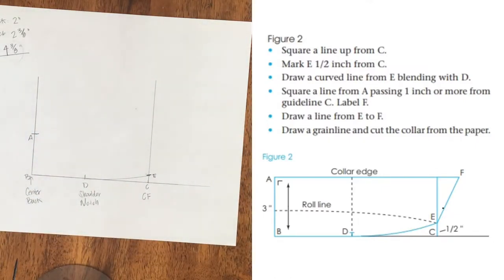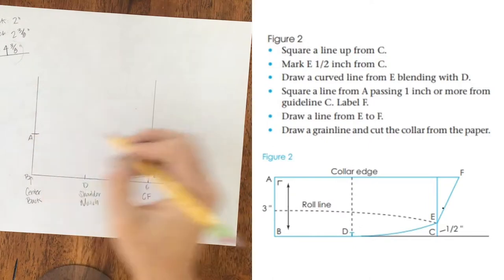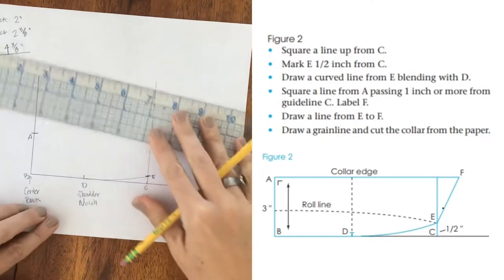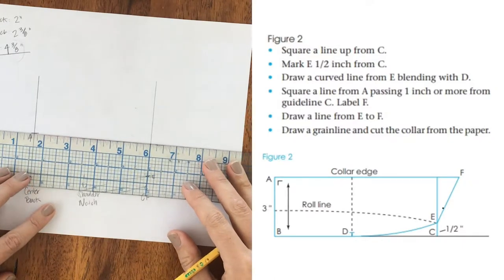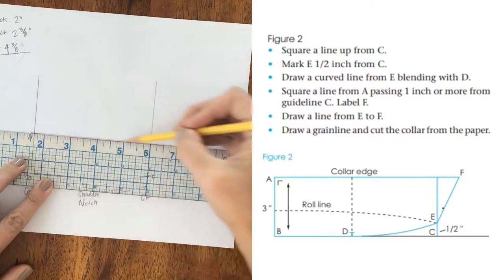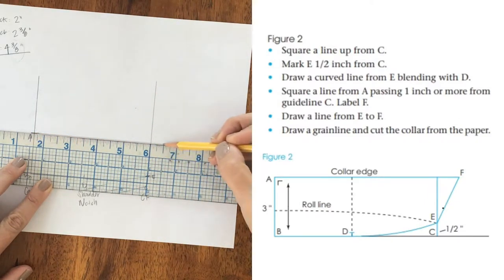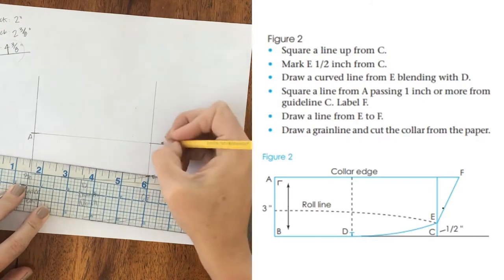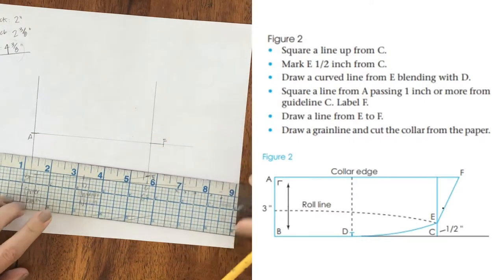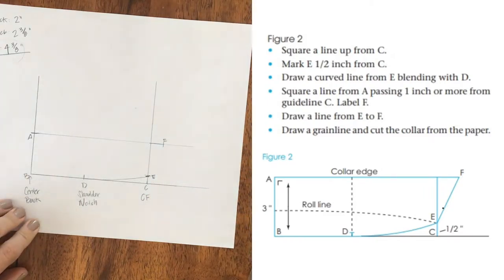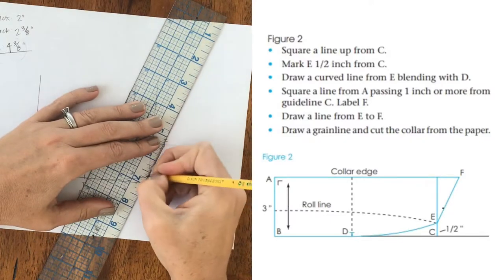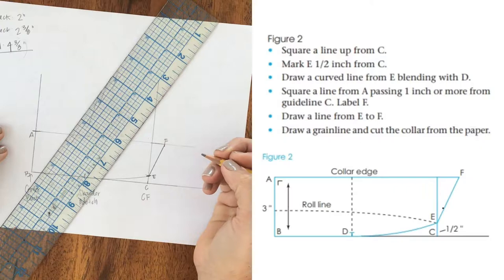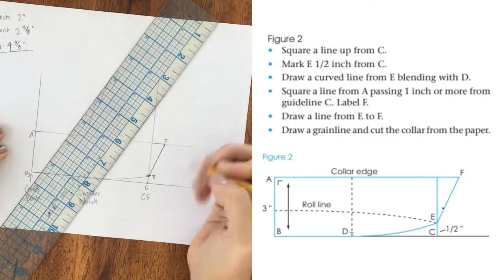Square a line from A, passing one inch or more from our guideline C. So I guess I'll do half an inch, since we're on the half scale. Okay, so I'm squaring a line. And here's six, so half an inch would be right here. I'm going to call that F. Draw a line from E to F. Draw a grain line and cut the collar from the paper.